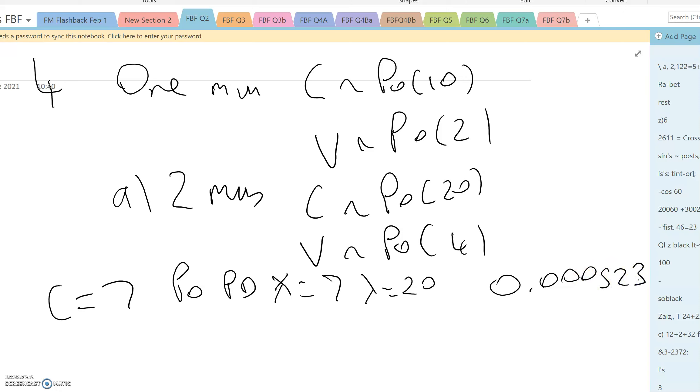If we're talking about three vans going past, we're saying V is 3, and it's Poisson again, it's Poisson PD